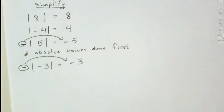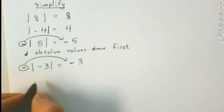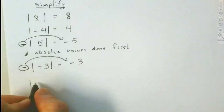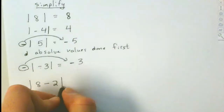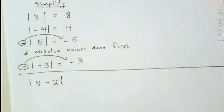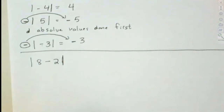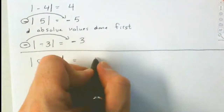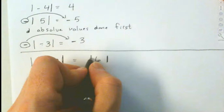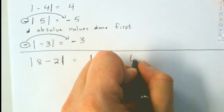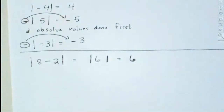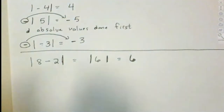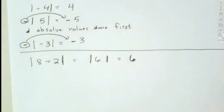What about when there are things inside the absolute value? What about 8 minus 2 inside the absolute value bars? Absolute values are like parentheses — the only difference is at the end we make it positive. We do what's inside first: 8 minus 2 is 6. And the absolute value of 6 is 6.